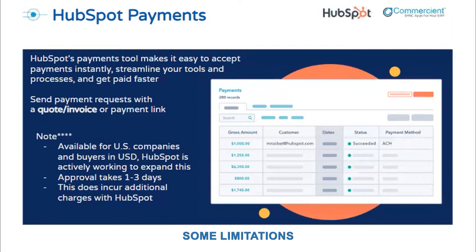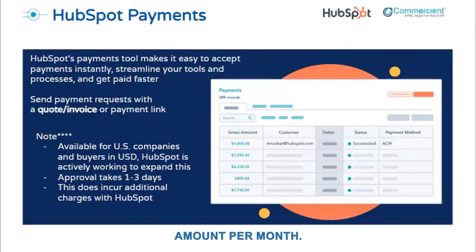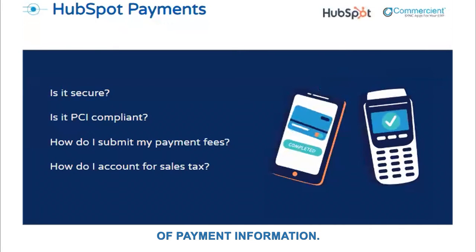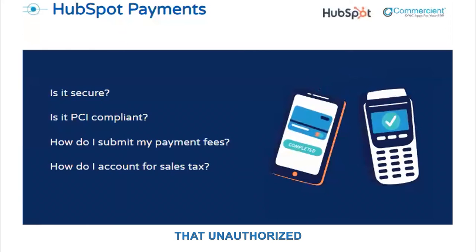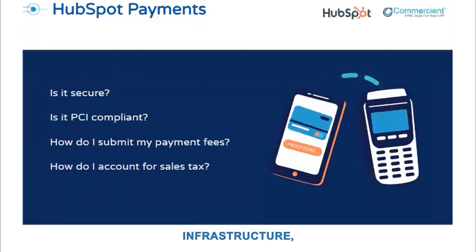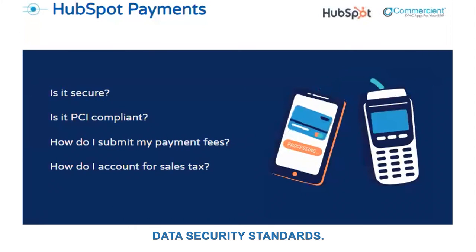There are some limitations on the allowed size of transactions: the max value of an individual transaction is $100k, and you'll be notified via email about your maximum dollar amount per month. Is it secure? Yes! HubSpot payments is built on Stripe, allowing for secure collection of payment information. Your buyer's payment credentials are also encrypted by Stripe, ensuring that unauthorized parties do not gain access to sensitive payment information. Is it PCI compliant? Yes — since it's built on the Stripe infrastructure, you get all the benefits of Stripe, including compliance with Payment Card Industry Data Security Standards Level 1.